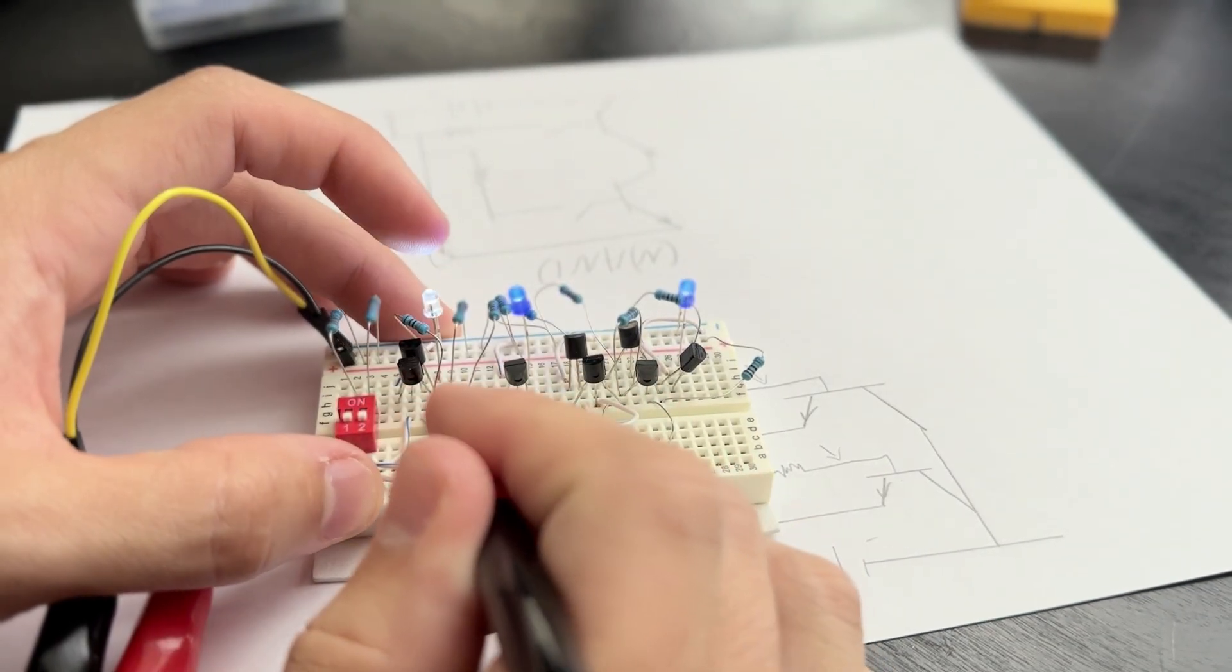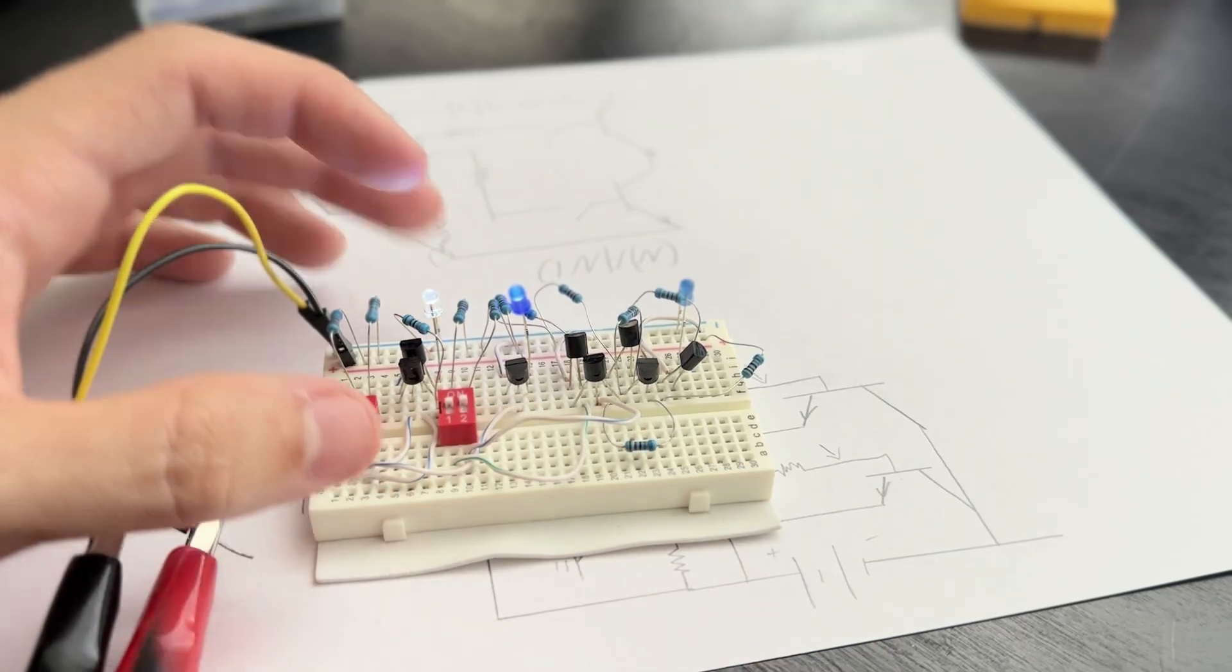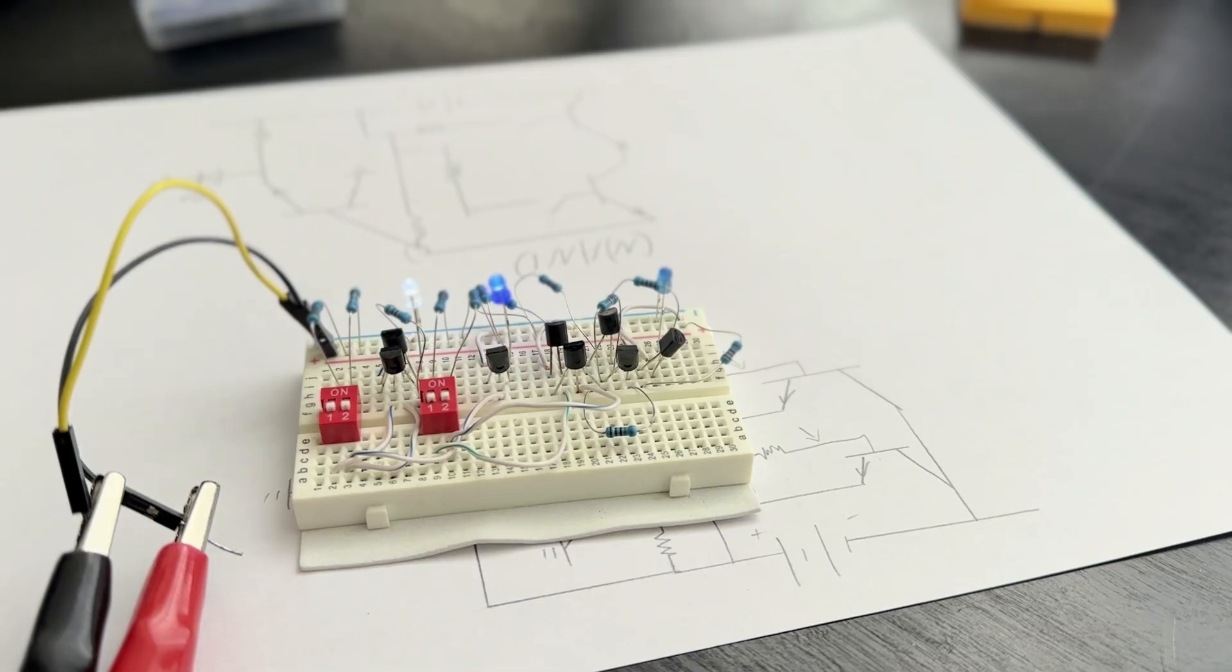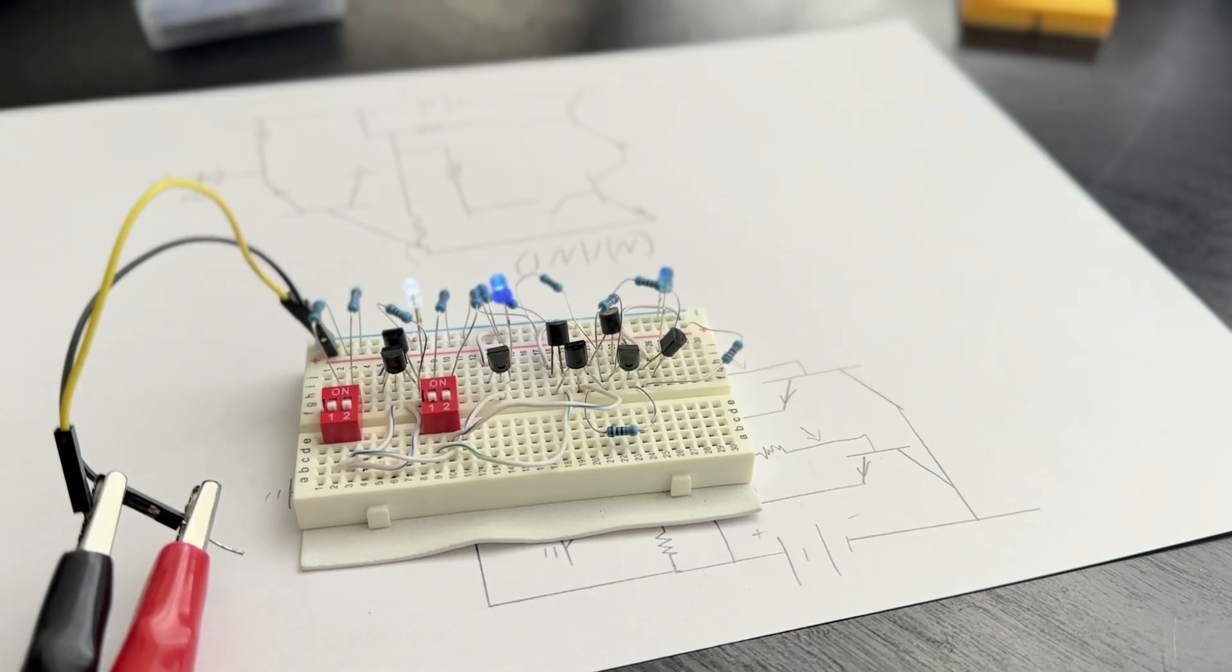The XOR gate, one on, both on, it's off. There we go. Super cool, actually. And then we're going to explain in the schematics how they work, too.